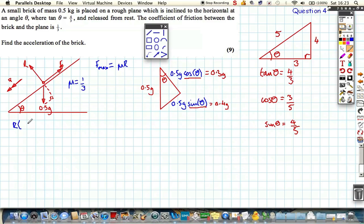Now, let's resolve in two different directions. Let's resolve the direction the brick wants to move, which is down the plane. Then I've got this component of weight, which is 0.4g, minus the friction, which is acting up the plane, or f_max, because it's moving. And that must be equal to the mass times the acceleration, which is 0.5a. That's from Newton's second law, F equals ma. This is the combined F. Don't get confused with friction. This is the combined force, which is equal to the mass times the acceleration.